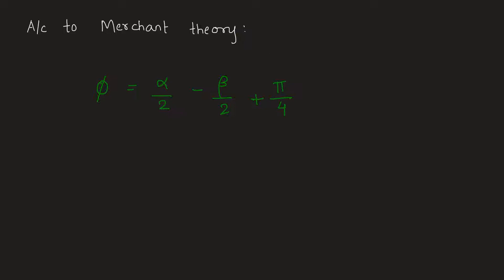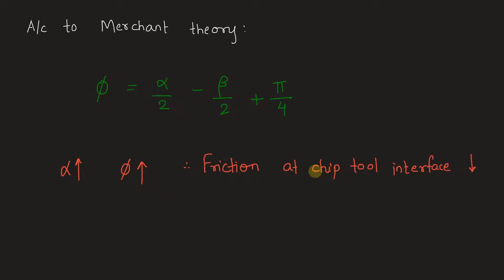From this expression, as rake angle α increases, the shear angle increases. As the shear angle increases, friction at the chip-tool interface decreases, because less friction is applicable at a higher shear angle. As friction decreases, less cutting force and shear force are required.